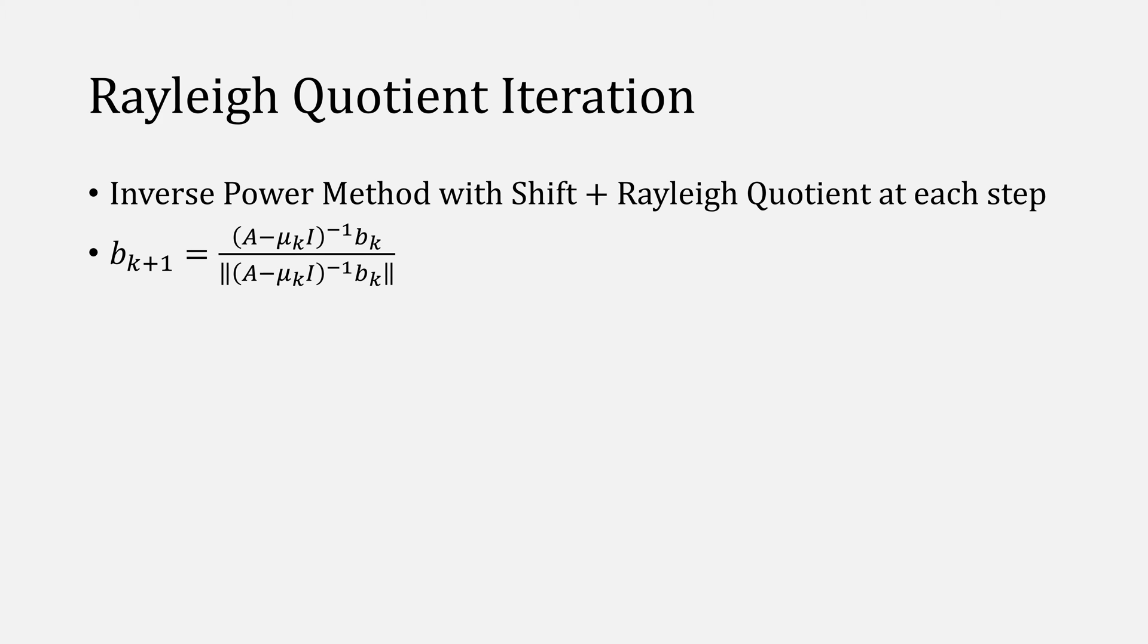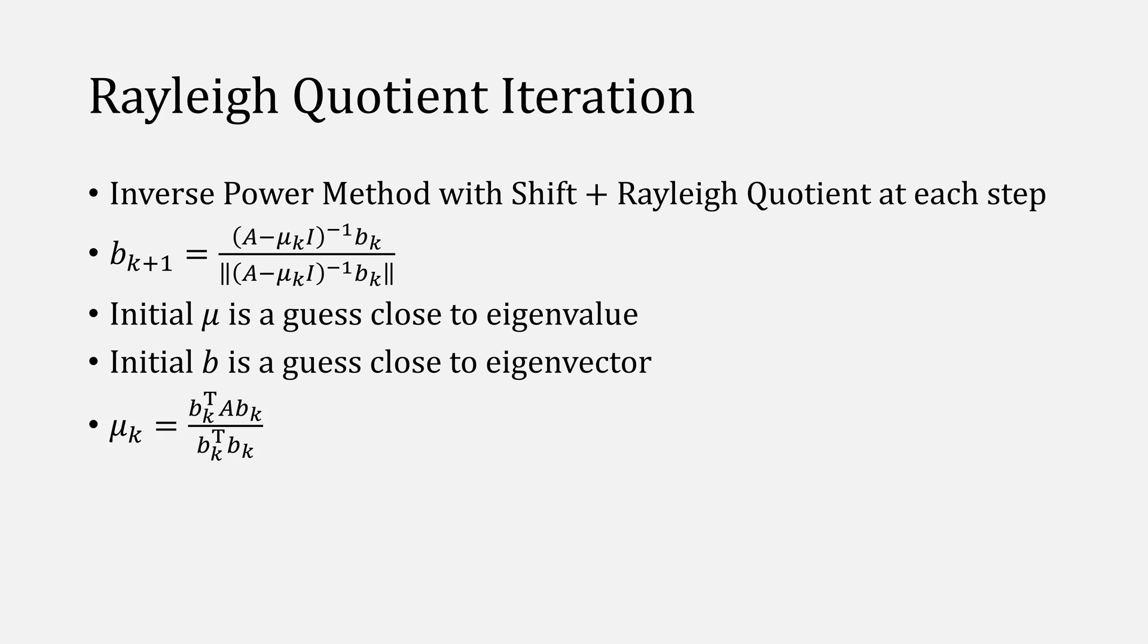This idea of applying the Rayleigh quotient early and often is the basis behind the Rayleigh quotient iteration. You simply take inverse power method, but always apply the Rayleigh quotient, which looks like this. With initial values for mu and b given close approximations to the eigenvalue and vector, after every step, we'll update mu sub k using the Rayleigh quotient. This does mean we do need to compute a new inverse at every step, but hopefully it will converge to the eigenvalue that much faster.